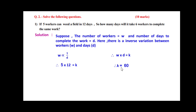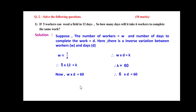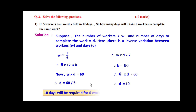Since K = 60, the equation is W × D = 60. Now we need to find D when W = 6. Substituting: 6 × D = 60, therefore D = 60 ÷ 6 = 10. So 10 days will be required for 6 workers to complete the same work.